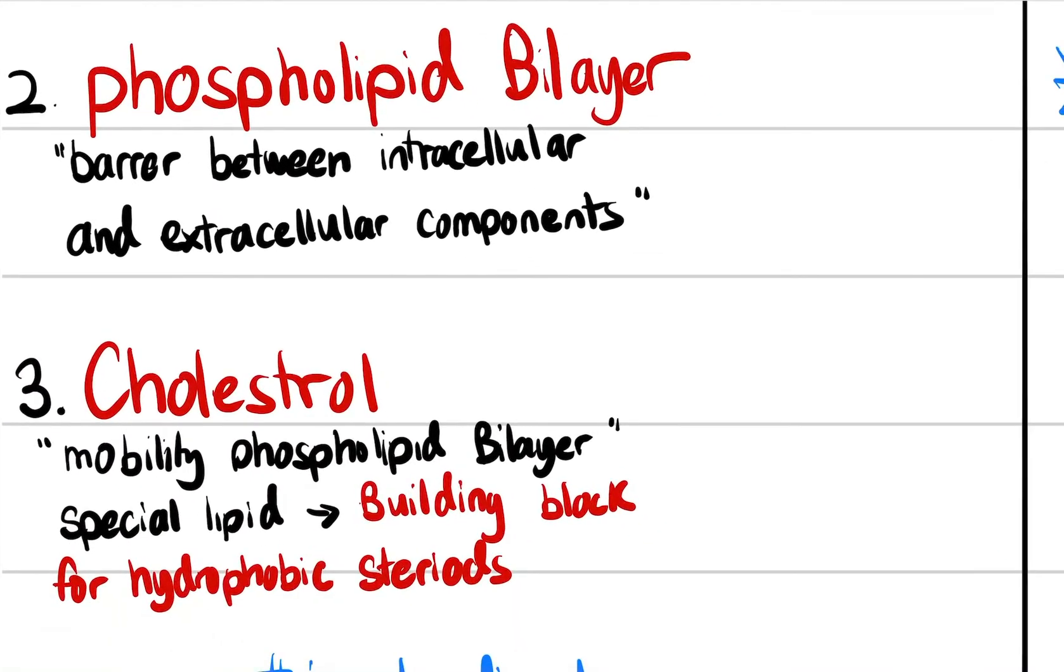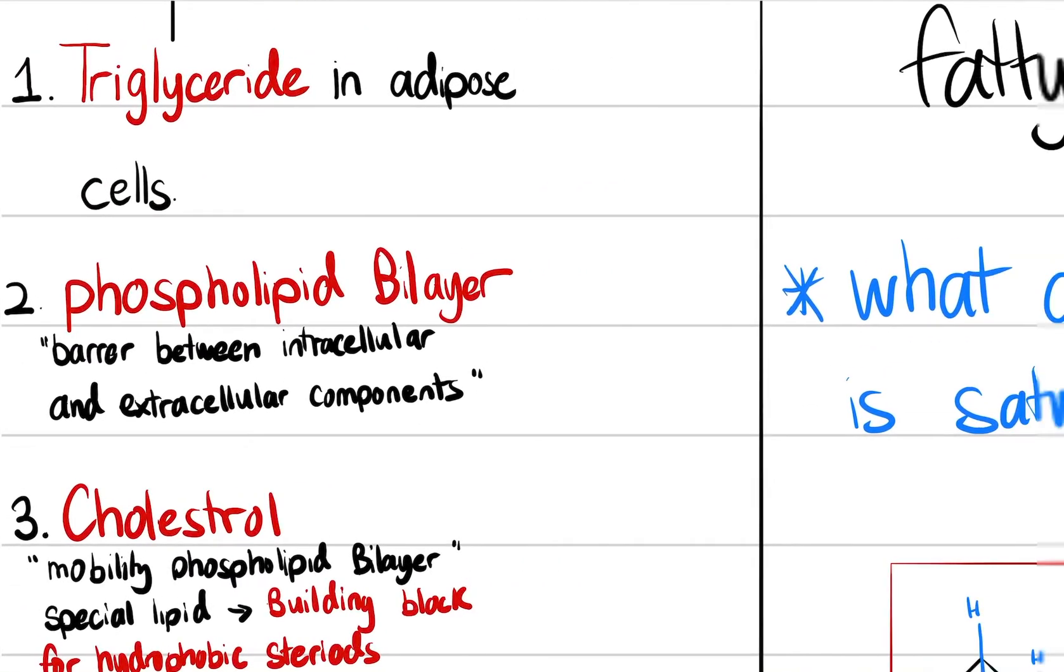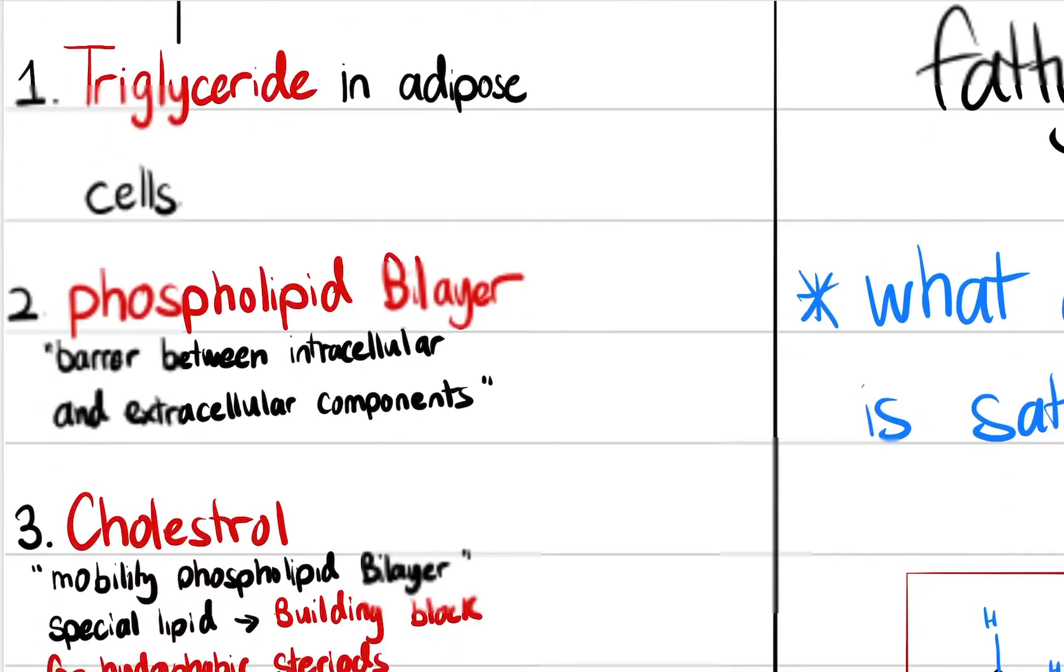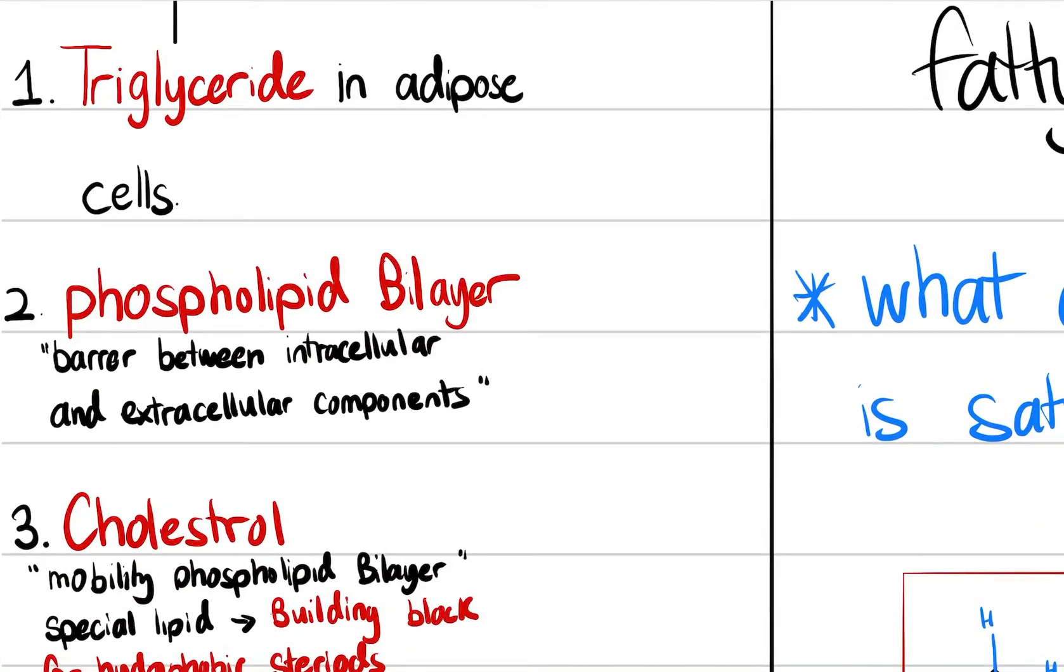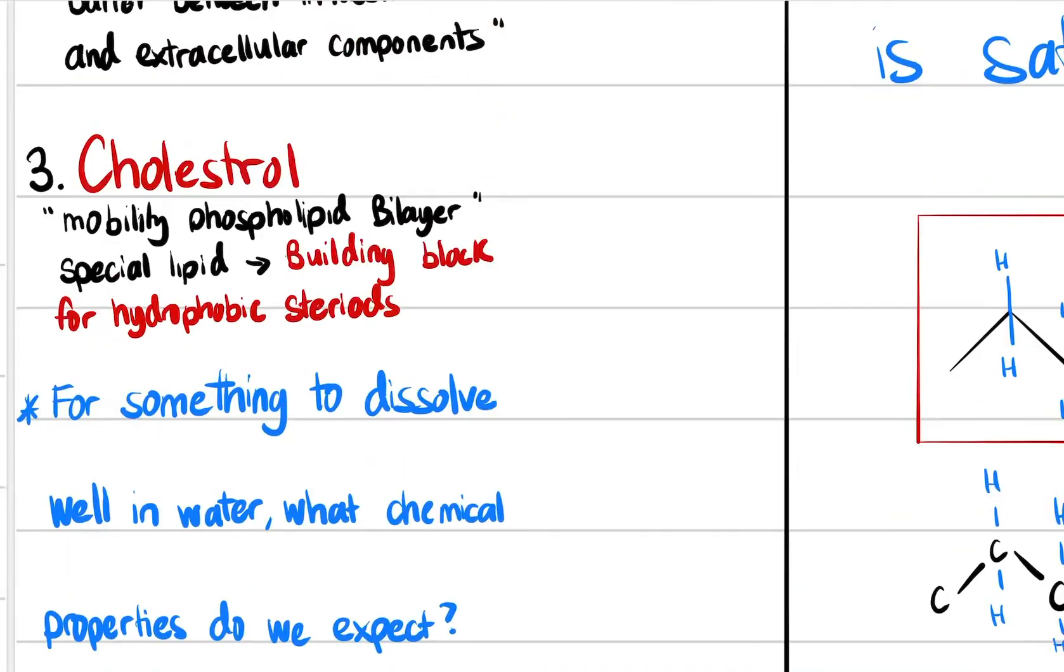And the third is cholesterol. Cholesterol is basically composed of lipids. It allows the mobility of the phospholipid bilayer. All these three points are discussed in very detail in other videos, but this is just an overview of what lipids are.